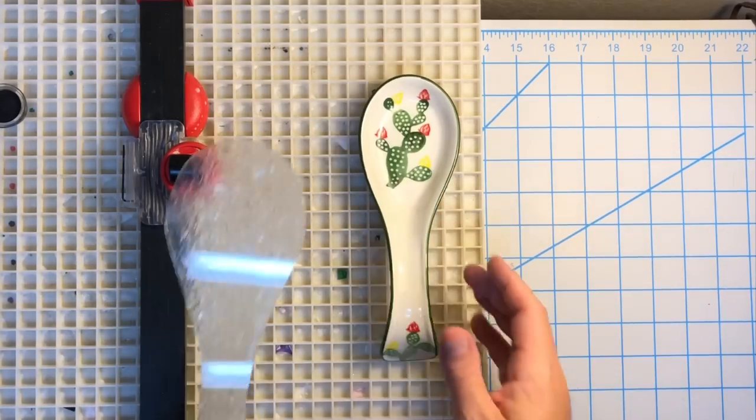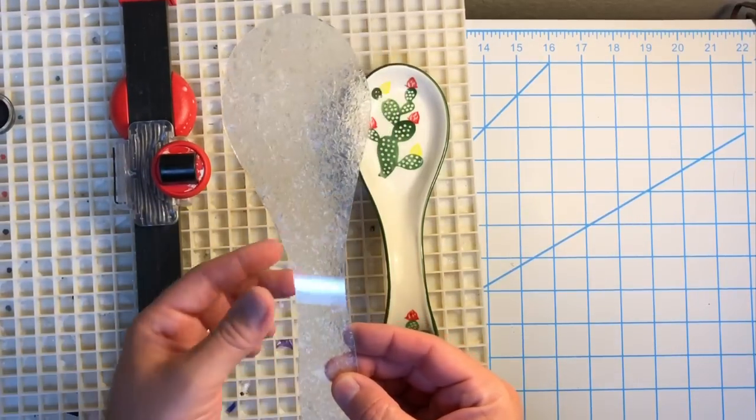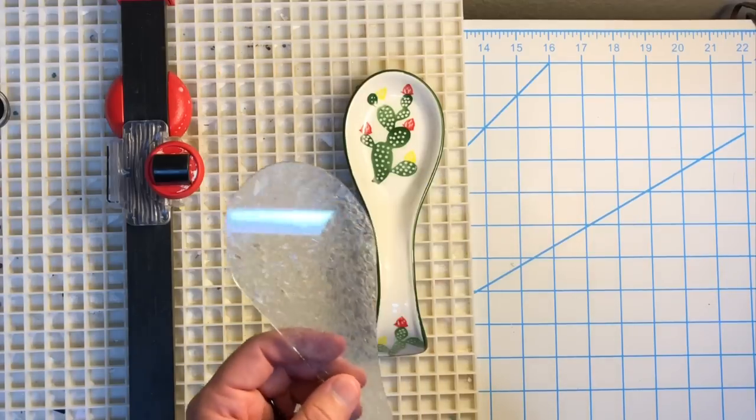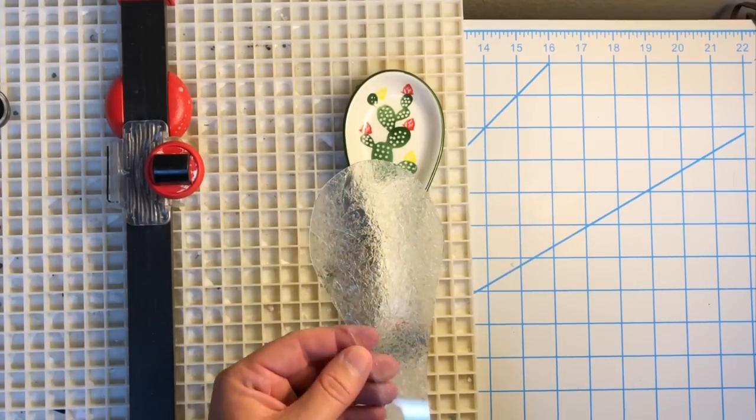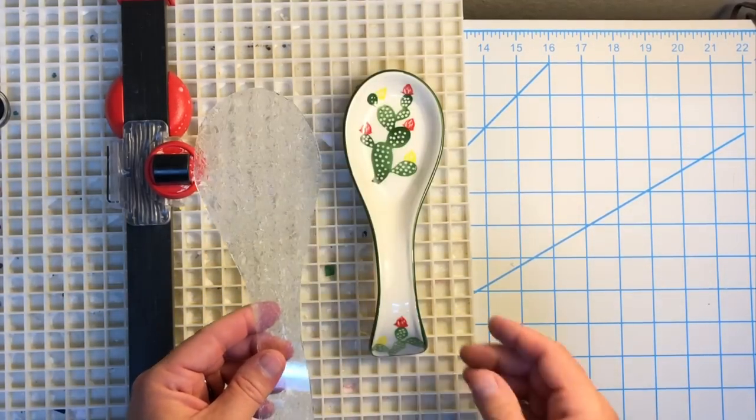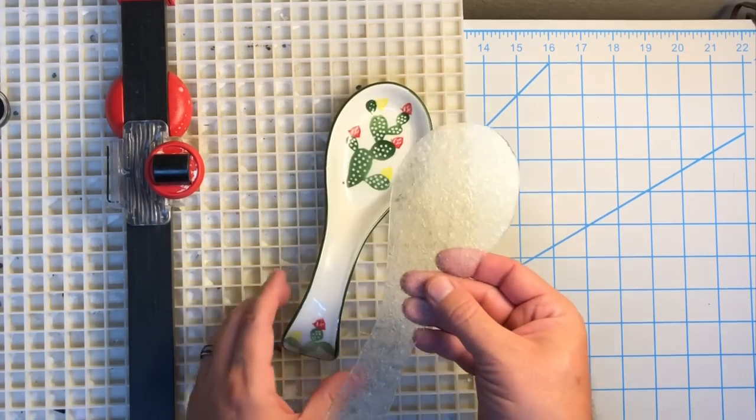Okay. So what I've done is I've cut my piece of glass. This is really just kind of a rough approximation of the shape. I've cleaned the glass and I think I'm pretty much ready to go into the kiln.